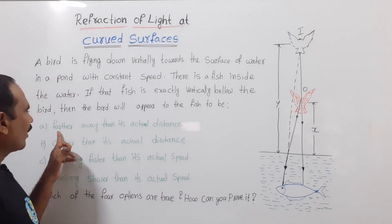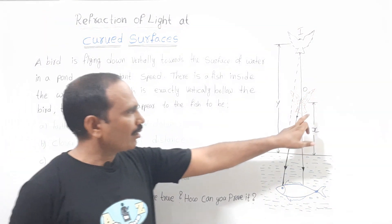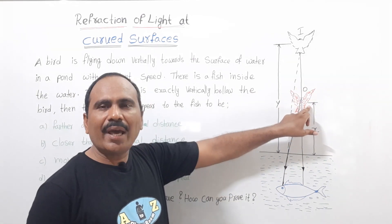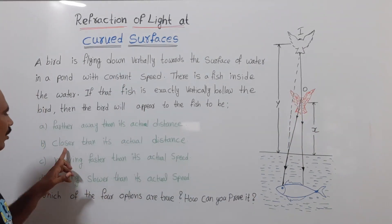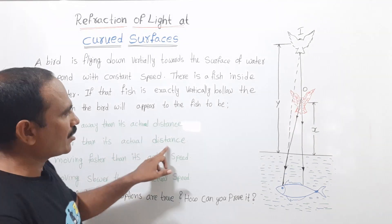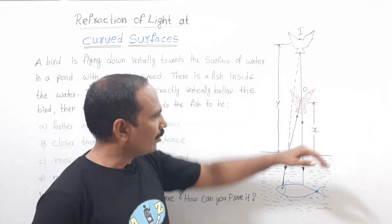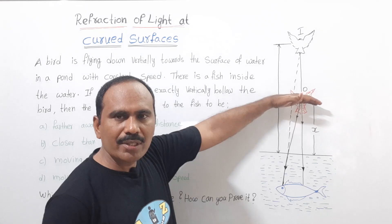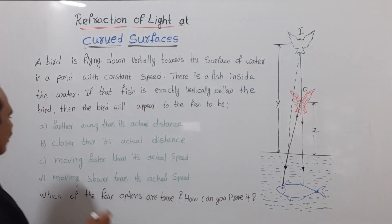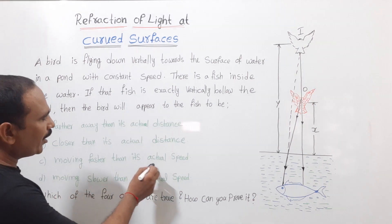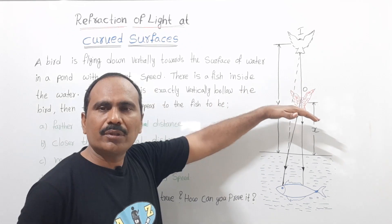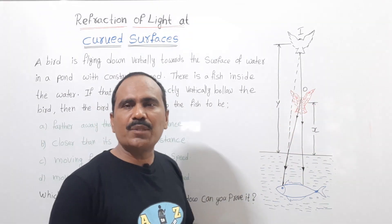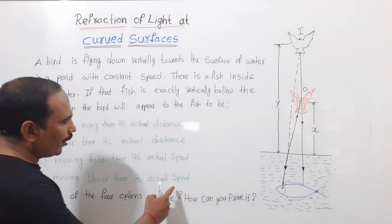First option: the bird appears farther away than its actual distance — more distance than the actual. Second option: closer than its actual distance — the bird appears nearer than the actual distance. Third option: the bird appears to be moving faster than its actual speed.